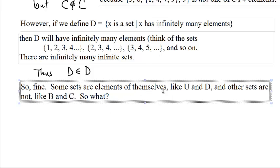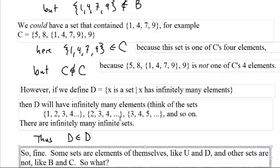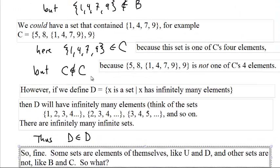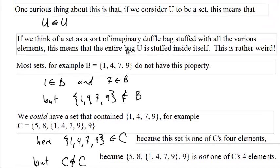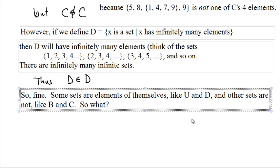So fine. Some sets are elements of themselves. U is an element of U. And D is an element of D. And other sets are not. C is not an element of C. B is not an element of B. So what? So what's so bad about this?